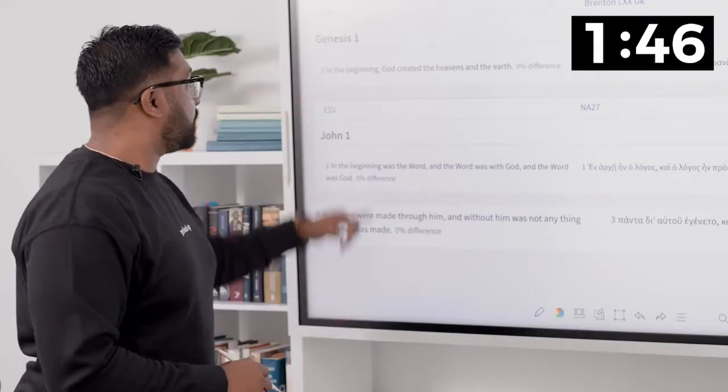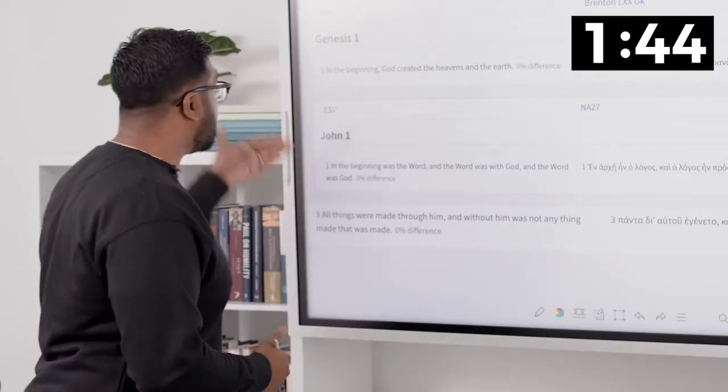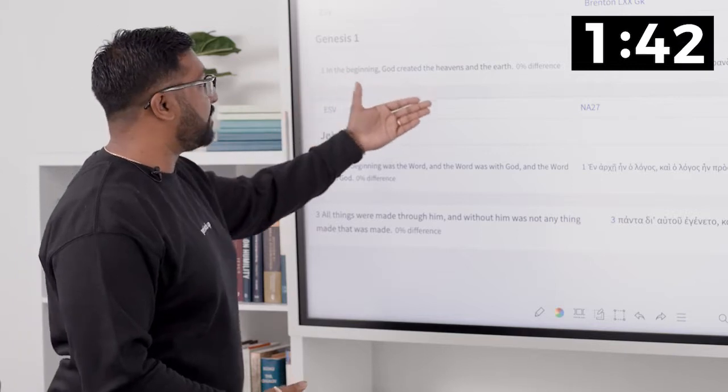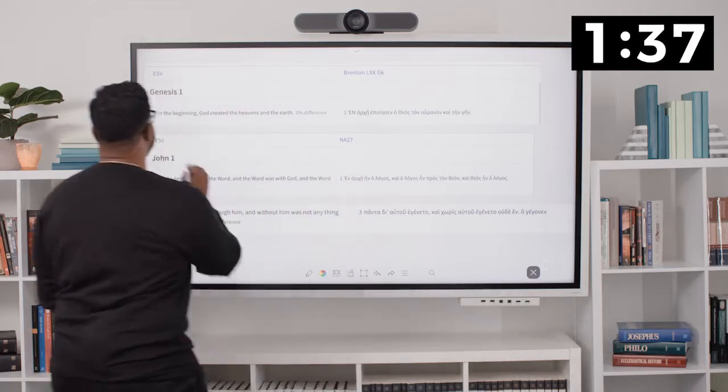In Genesis chapter 1 we have the creation story. In the very beginning God created the heavens and the earth. Now the Hebrew Bible in the Greek is the Septuagint. Notice this.